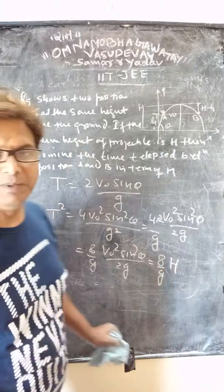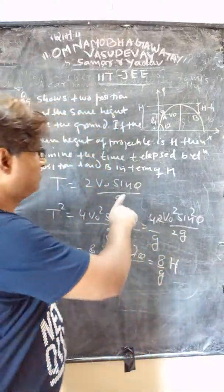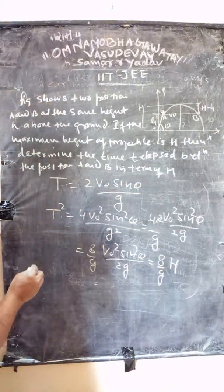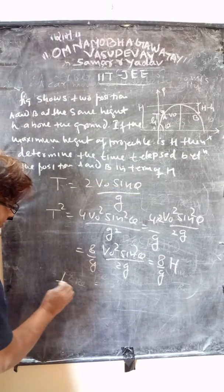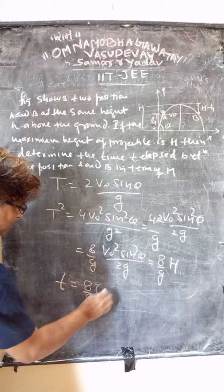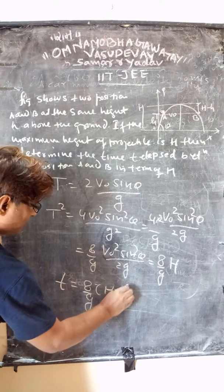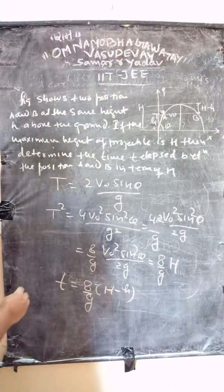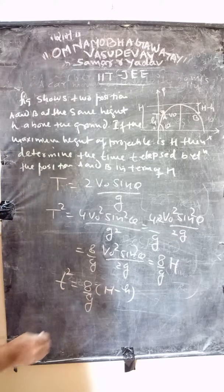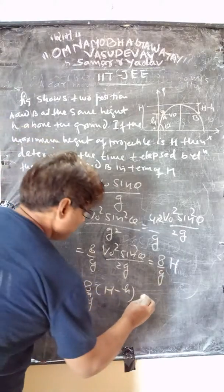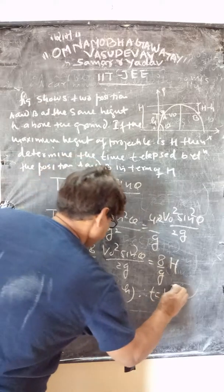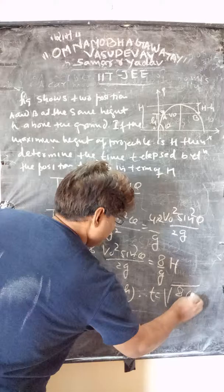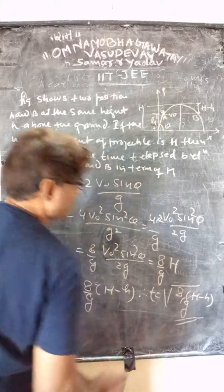Similarly, we can get the time between positions A and B. The time squared for this interval is given by 8 upon g into (capital H minus small h). Therefore, the time lapse t equals the square root of 8 upon g into (H minus h). This gives us the solution to the numerical.